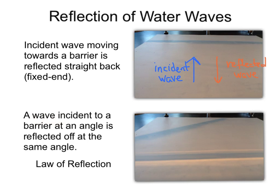But what happens if we take a wave incident to a barrier at an angle? How is that wave reflected? Well, it's reflected off at the same angle and obeys the law of reflection. Let's take a look.